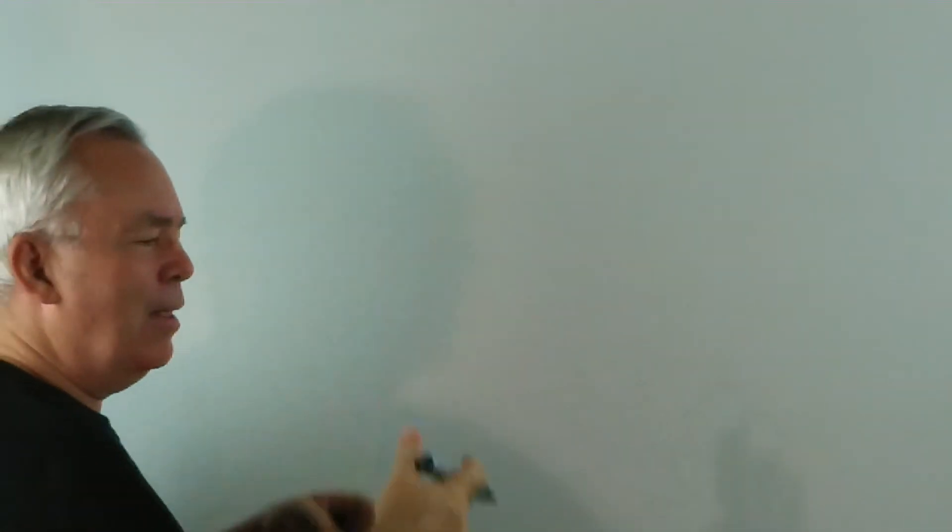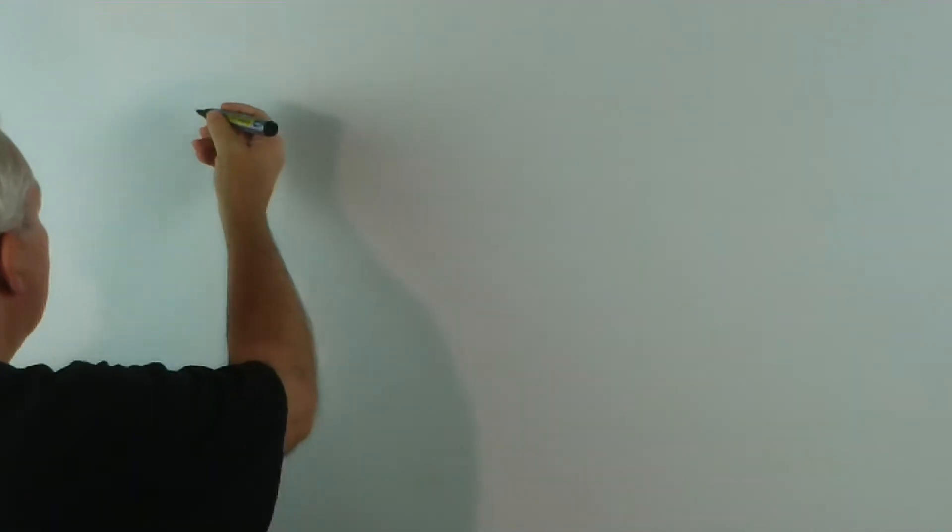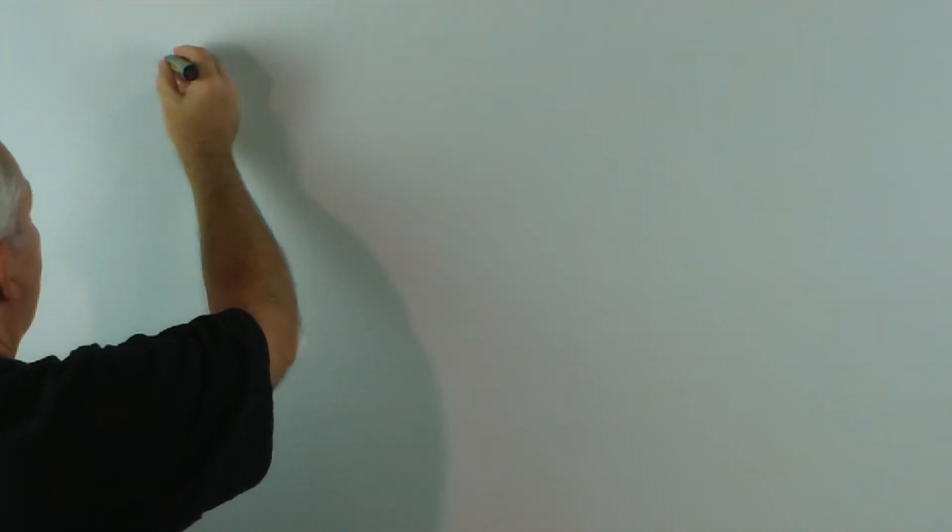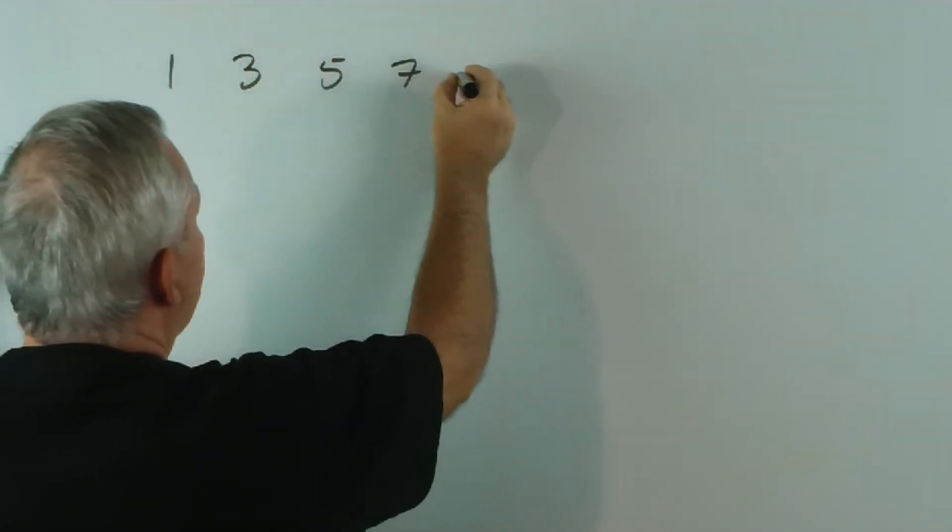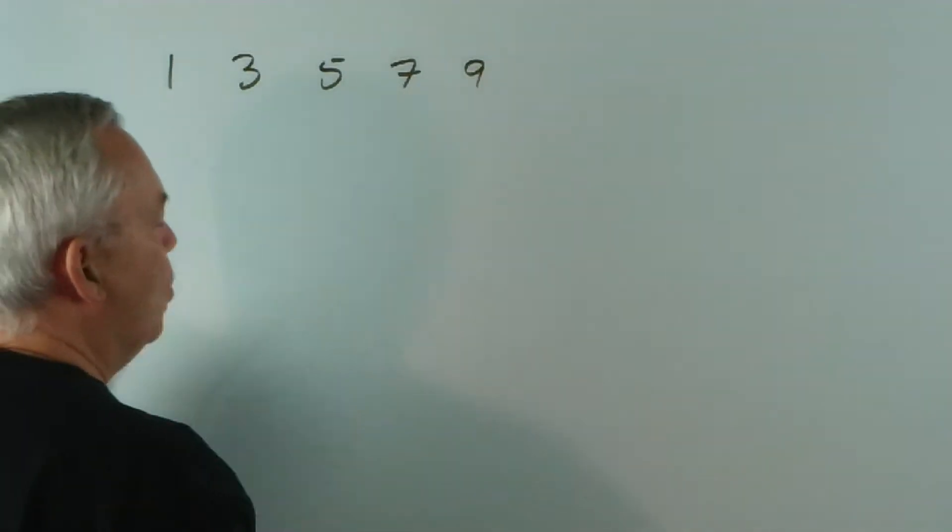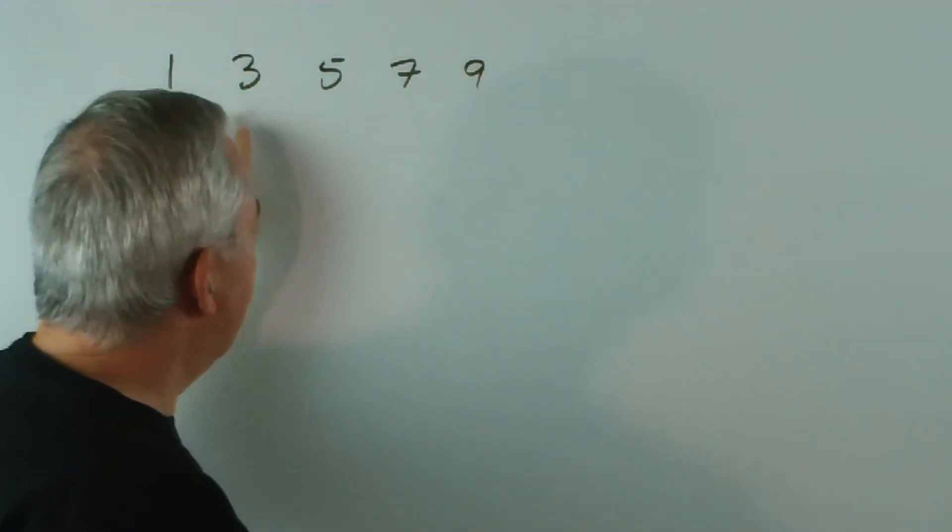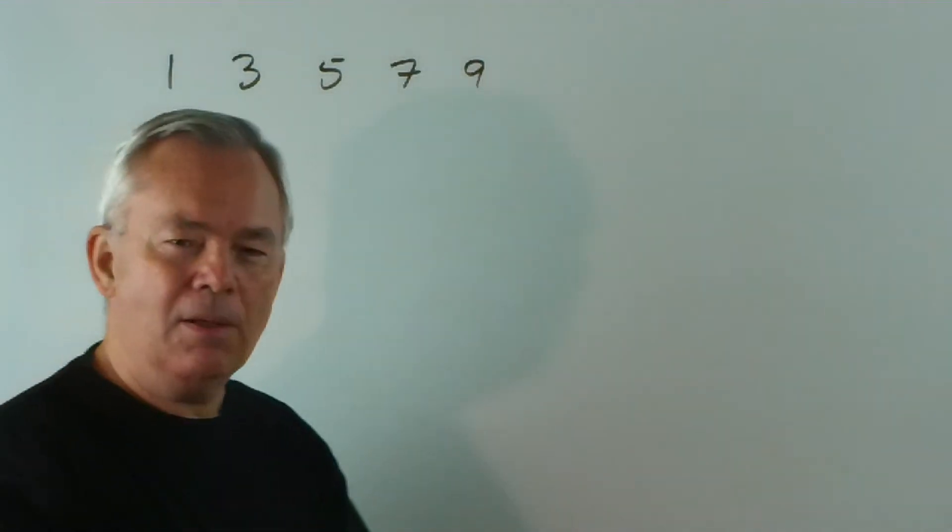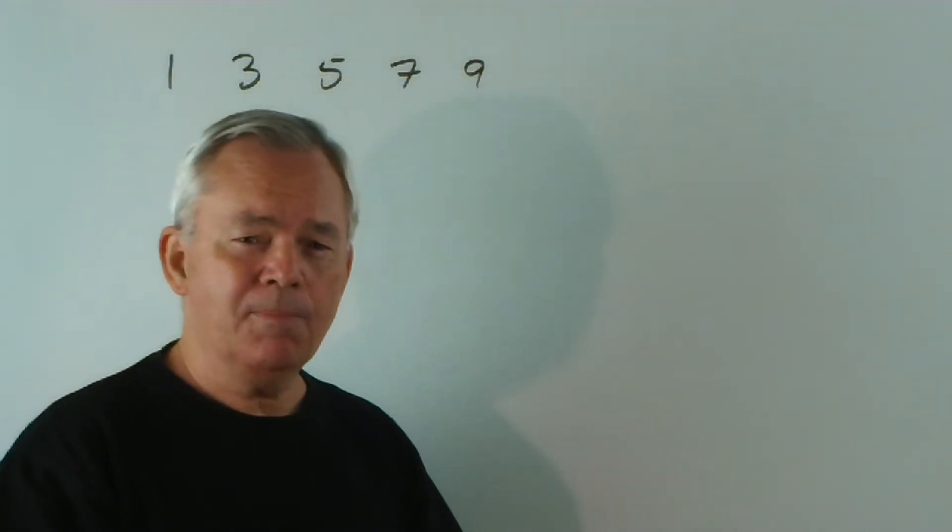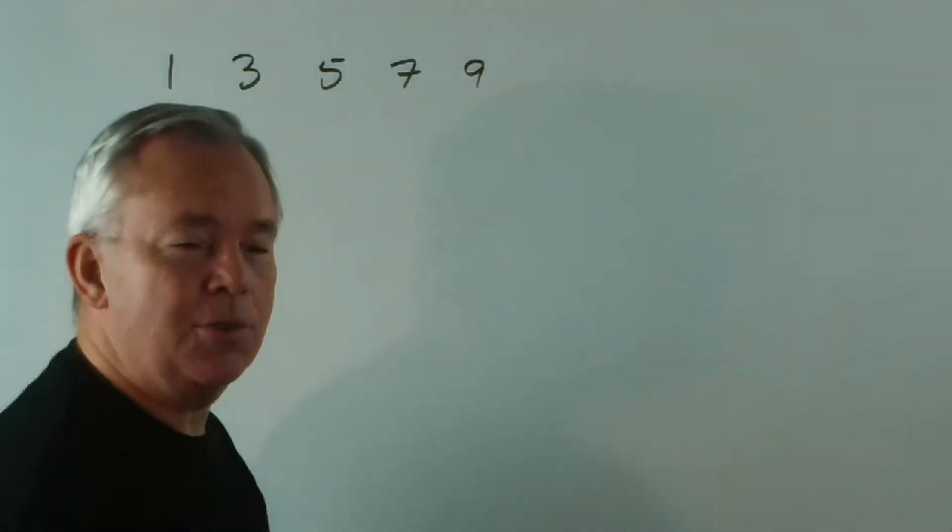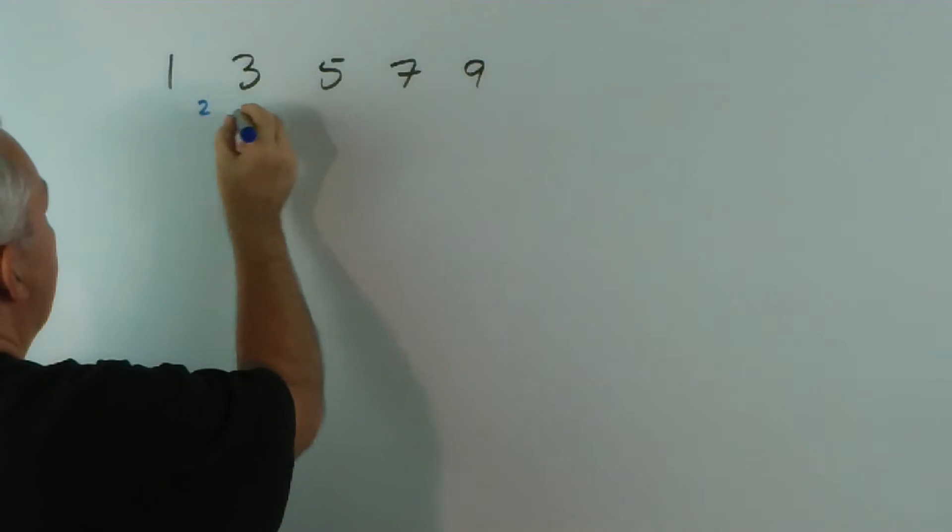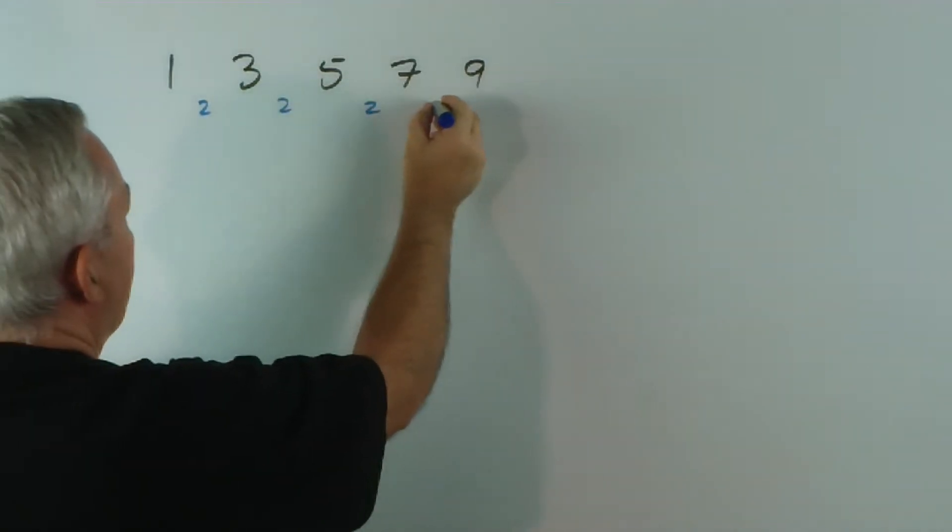And what I discovered was this. In analysing a sequence of numbers, for example, let's choose a really simple one. Let's choose the odd numbers, 1, 3, 5, 7, 9. What he pointed out is that when we have a simple sequence like this, if we actually analyse the gaps between them, they're always consistent. The gaps here are 2. They go up by 2s.